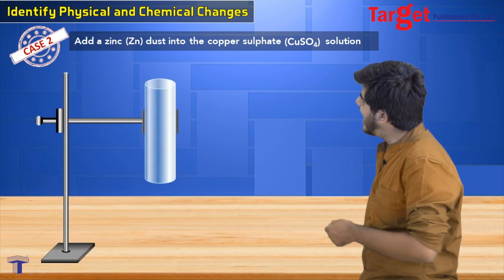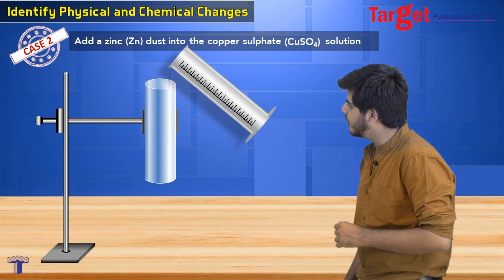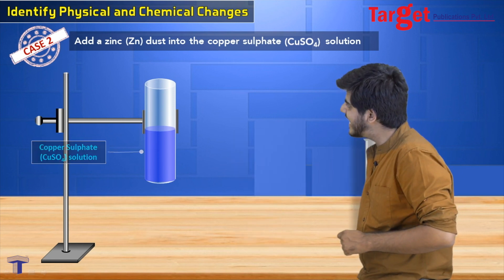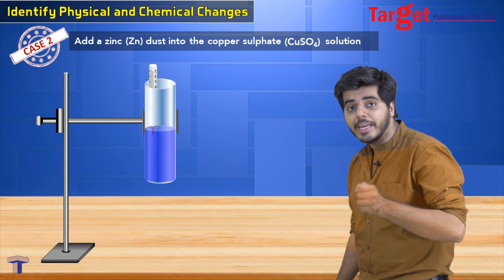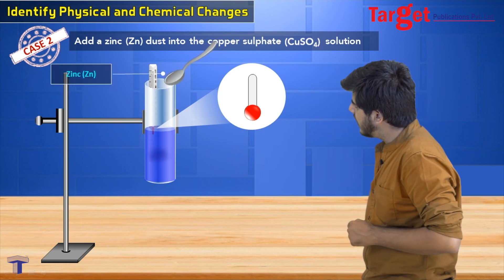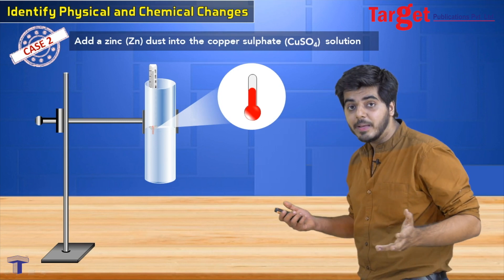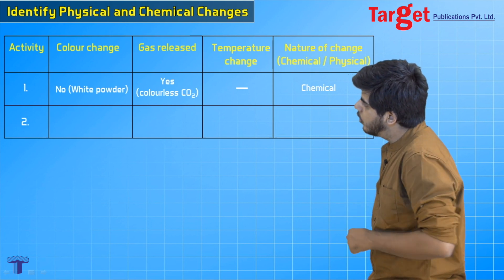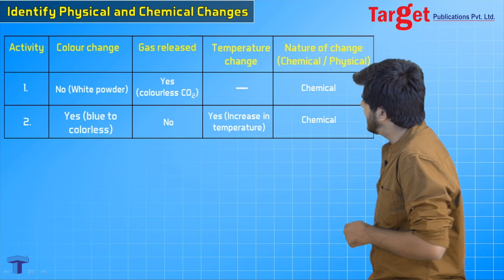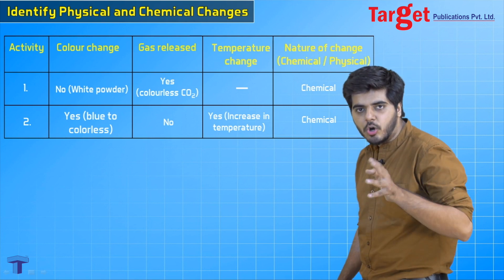Now let us move to case number two: add zinc dust into copper sulphate (CuSO4) solution. First, pour copper sulphate solution into a test tube arranged on a stand. Measure the initial temperature with the thermometer — a specific mercury rise is noted. Then add zinc powder. The temperature is observed to increase. Result: color change — yes, blue to colorless; gas released — no; temperature change — yes, increase in temperature; nature — chemical change.